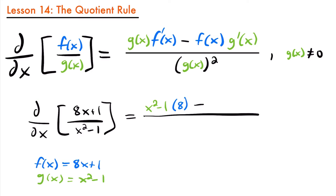Then we subtract the numerator function, so we'll have 8x plus 1 multiplied by the derivative of the denominator, x squared minus 1. The derivative of x squared minus 1 is 2x, because the derivative of x squared is 2x and the derivative of negative 1 is 0. In the denominator of our answer we'll have g of x squared, so x squared minus 1, quantity squared. That's an acceptable form of the answer.